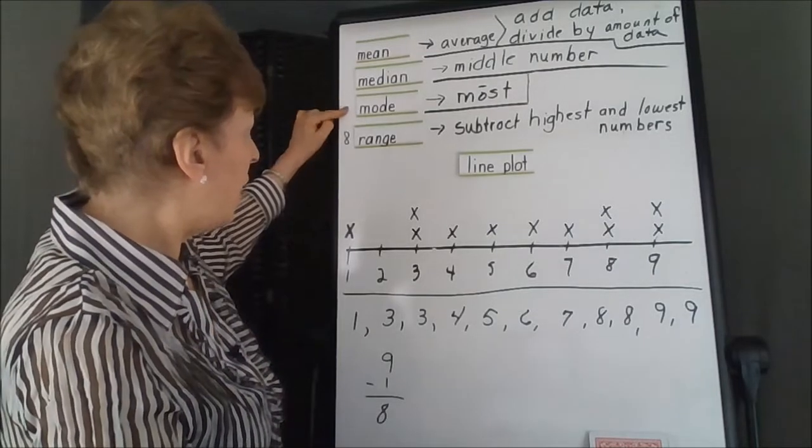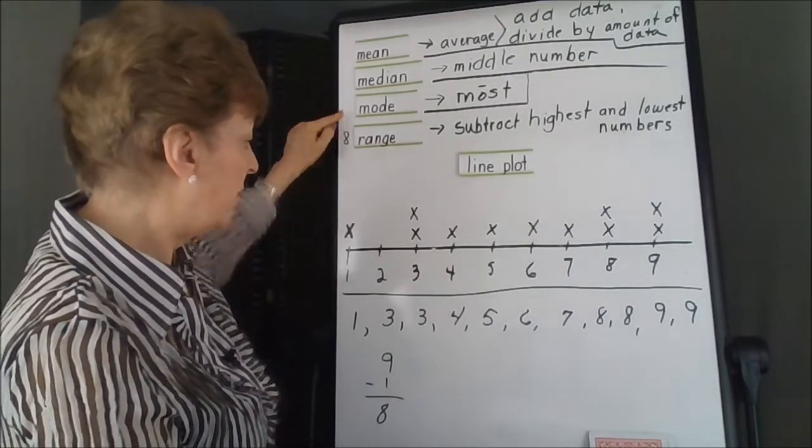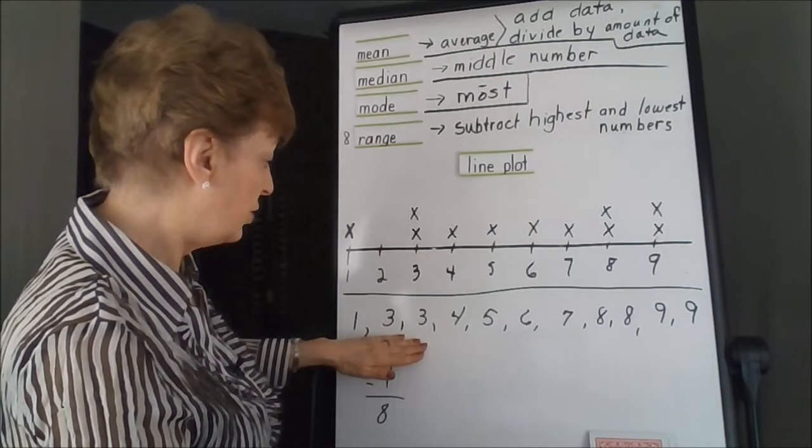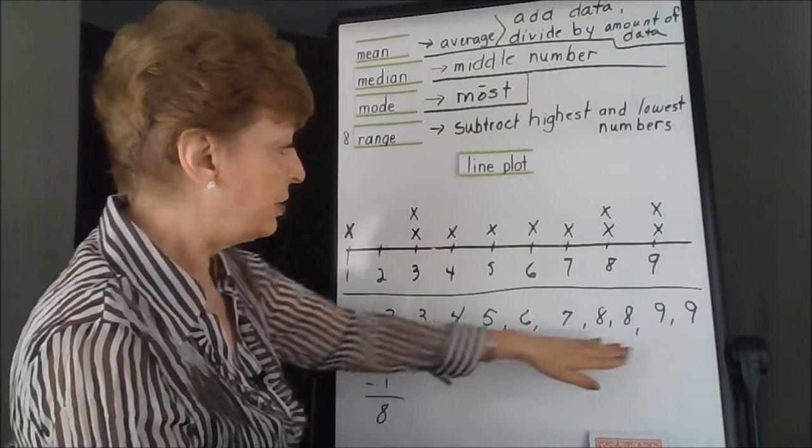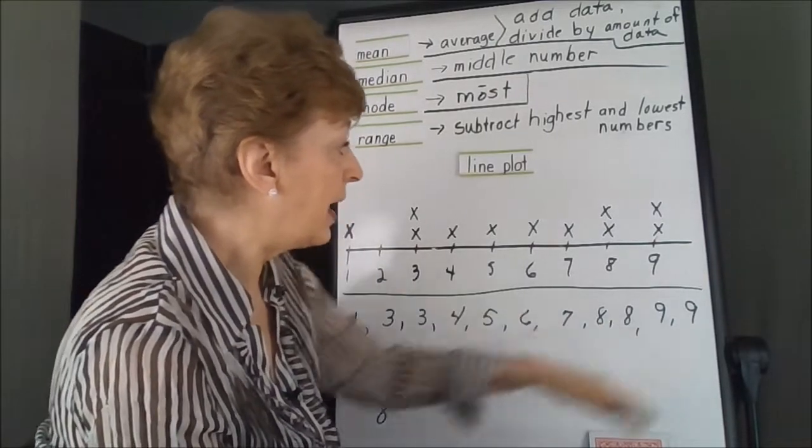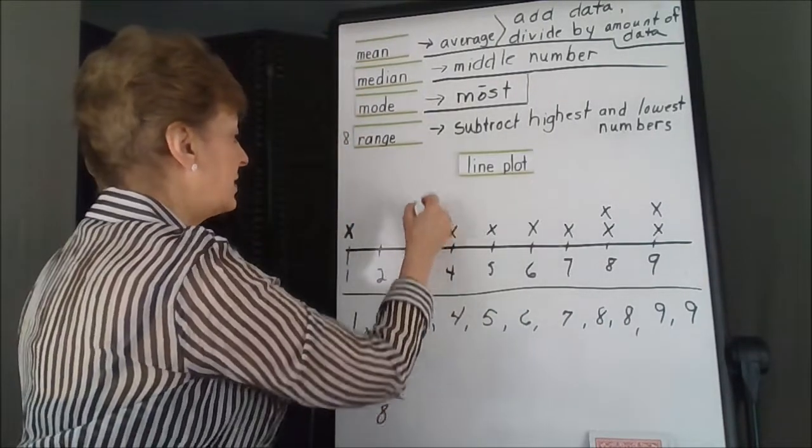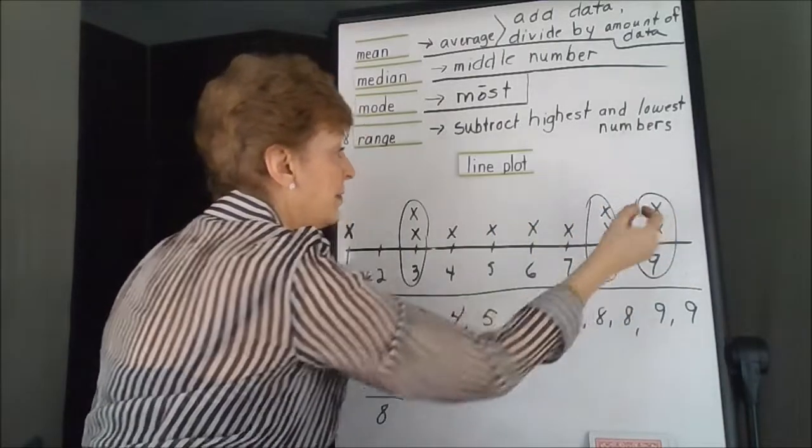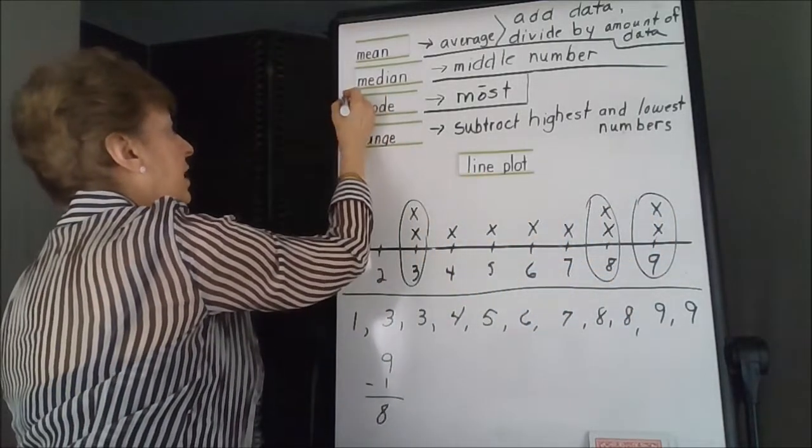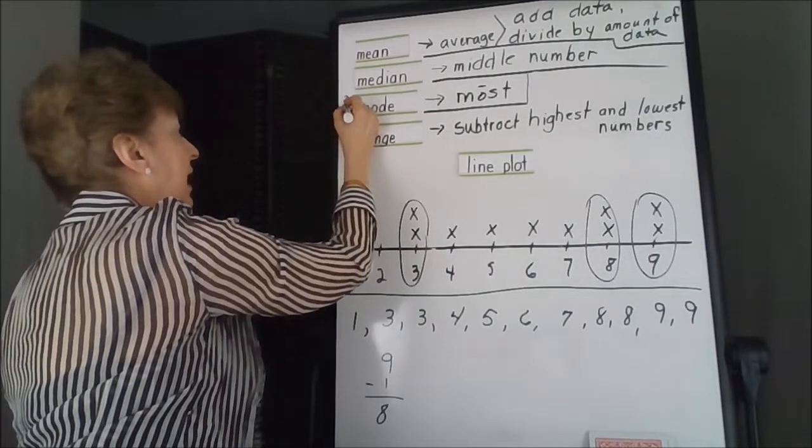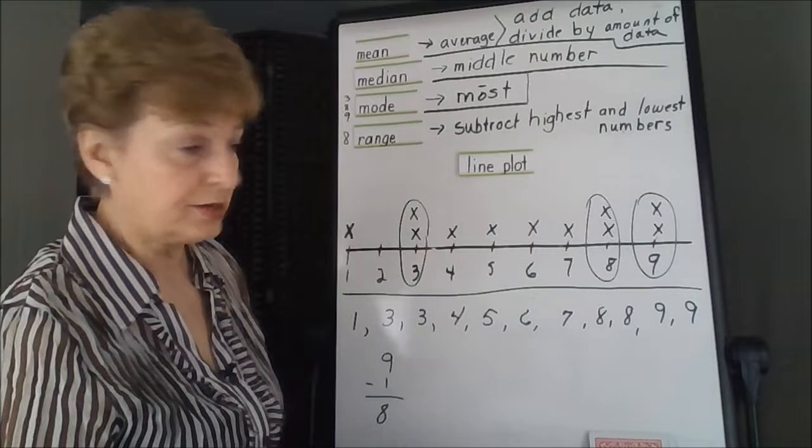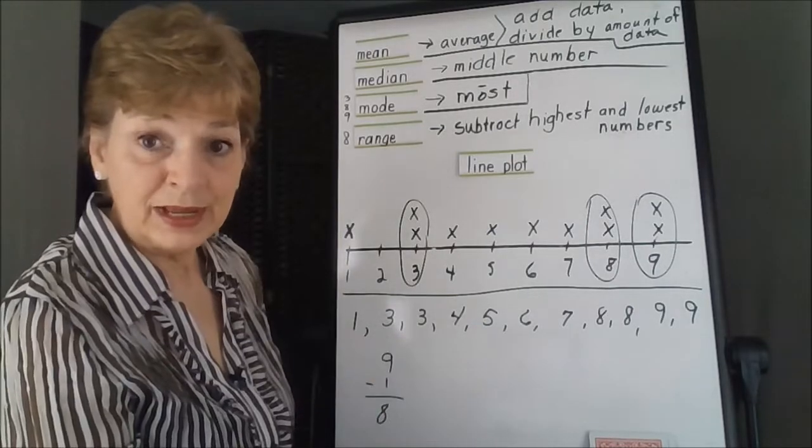The mode is the number that is repeated the most times. So we have two 3's, two 8's, and two 9's. So in this case our mode would be three different numbers. We've got a 3, an 8, and a 9 are the modes for this particular set of data.